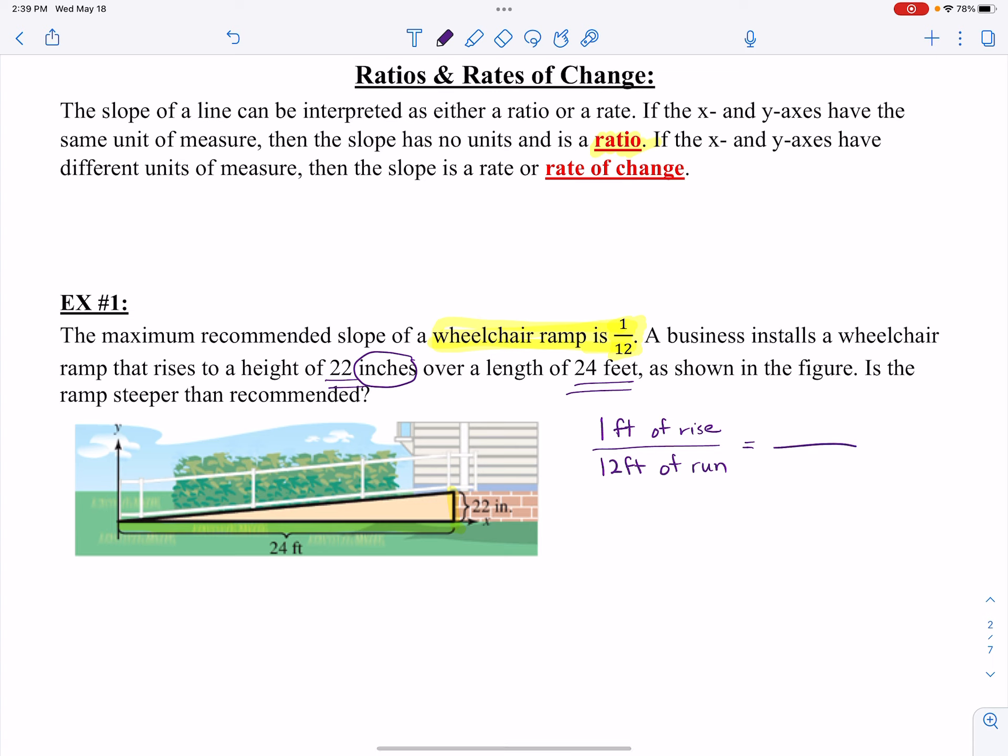If I were to take this ratio, that means for this 24 feet of run, I could have no more than 2 feet of rise. That's my same ratio. 1 to 12 is 2 to 24. Those are equal to each other. So I could have this rise up to 24 inches, because that's 2 feet, but it only goes up 22 inches. It's okay that it's not that steep. It just cannot be steeper than recommended.